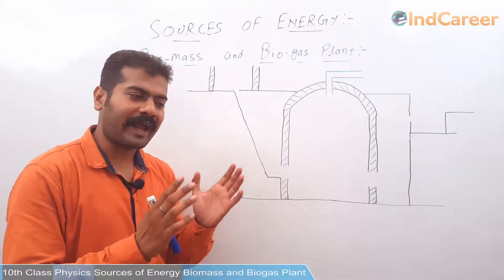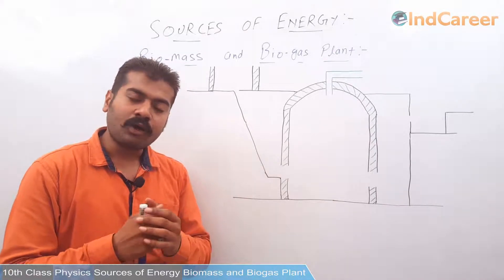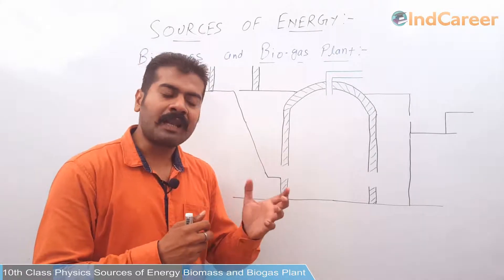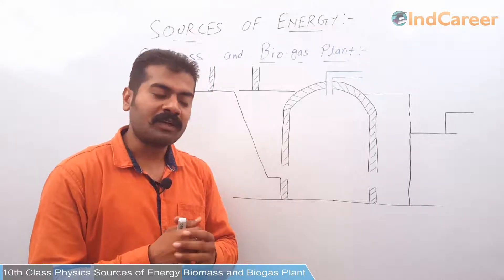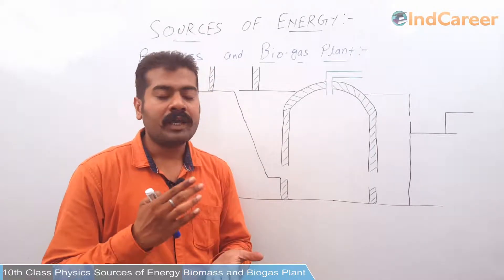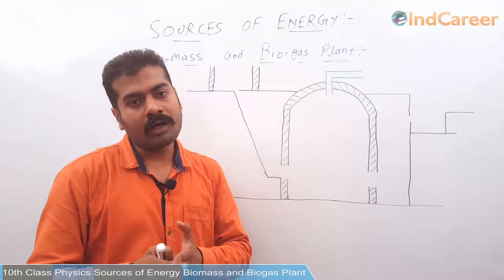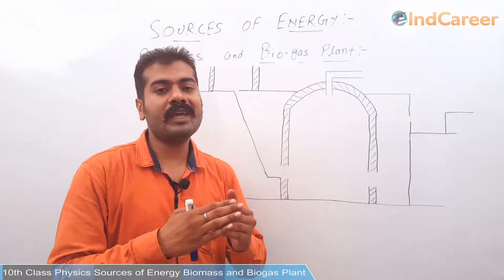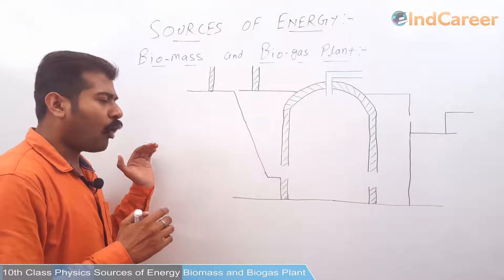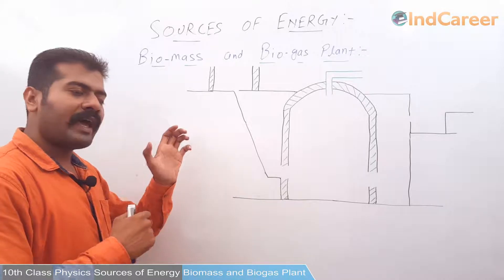Biomass is all that which can degrade or decompose automatically — what we can say, all things which can be biodegradable, which can be decomposed automatically with the help of some microorganisms. For example, dead plants, dead leaves, trees, dead animals, animal waste, poultry waste, human waste, etc. All these are considered as biomass because they can be decomposed with the help of microorganisms automatically.